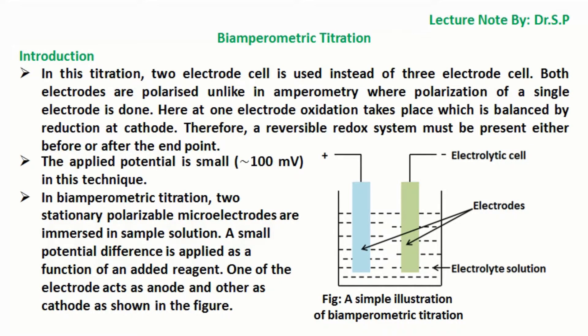In this titration, 2-electrode cell is used instead of 3-electrode cell. Both electrodes are polarized, unlike in amperometry where polarization of a single electrode is done. Here at one electrode oxidation takes place which is balanced by reduction at cathode. Therefore, a reversible redox system must be present either before or after the end point. The applied potential is small, approximately 100 mV in this technique.